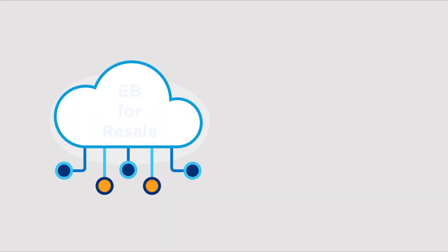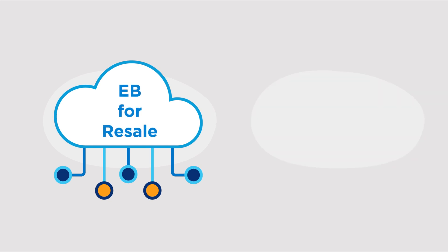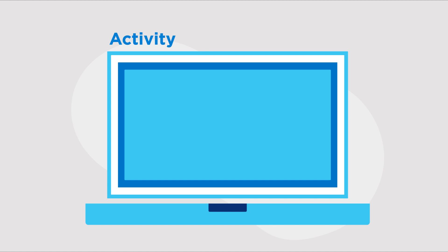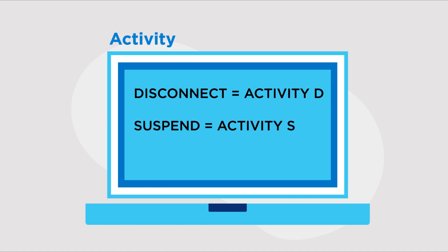Now, let's move on to initiating that order. Your service type may vary depending on the product, but the most common are EB for resale and MB for LWS. Next up is activity. All disconnects will have an activity of D. Suspends will have an activity of S, and restores have an activity of B.